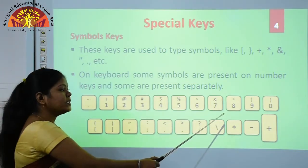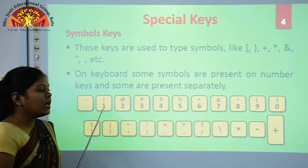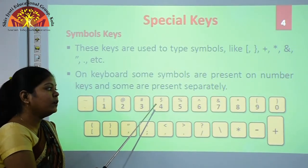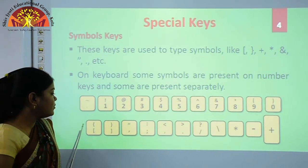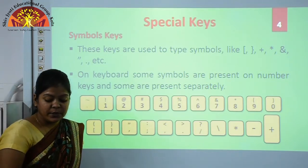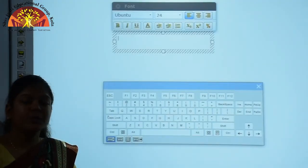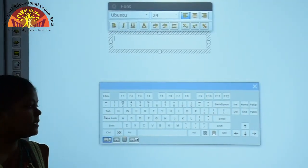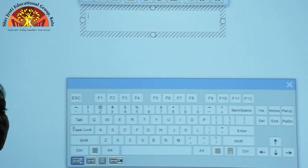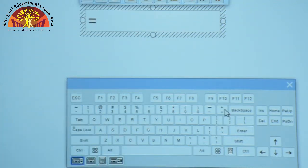These are the number keys present on your keyboard, and these number keys have some symbols on them — like the exclamation mark, at-rate symbol, hash symbol, dollar symbol. We also have some symbol keys which are used separately only for symbols. Now we will see the practical use of the symbol key. To type symbols, we use the symbol keys. You can see this is the equal-to symbol key; when we press it, the equal-to symbol appears on your screen.